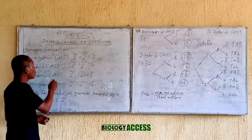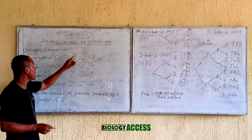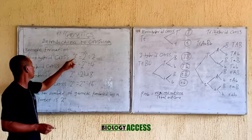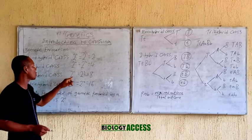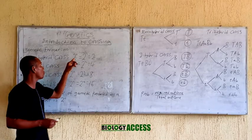For monohybrid cross, n is 1. For dihybrid cross, n is 2. For trihybrid and so on and so forth.